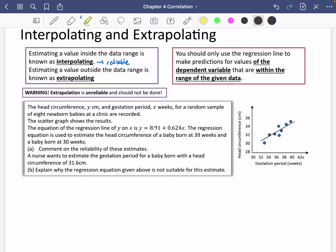It says here that the head circumference y cm and the gestation period x weeks for a random sample of eight newborn babies at a clinic are recorded. And you can see that it's eight newborn babies because we've got one, two, three, four, five, six, seven, eight dots here. Gestation period basically means how long they have been growing in the mother's womb. That's what gestation means.